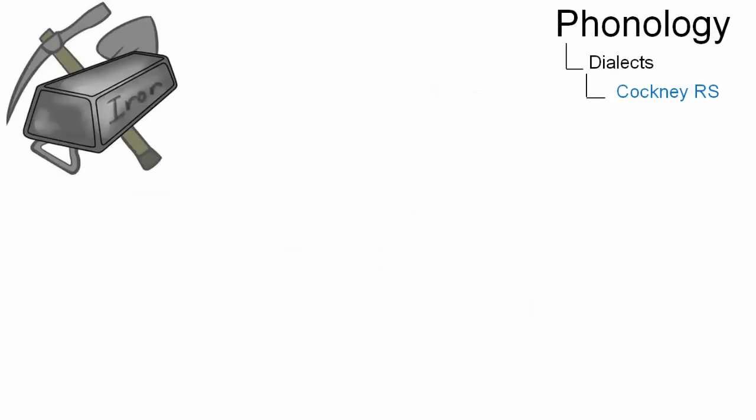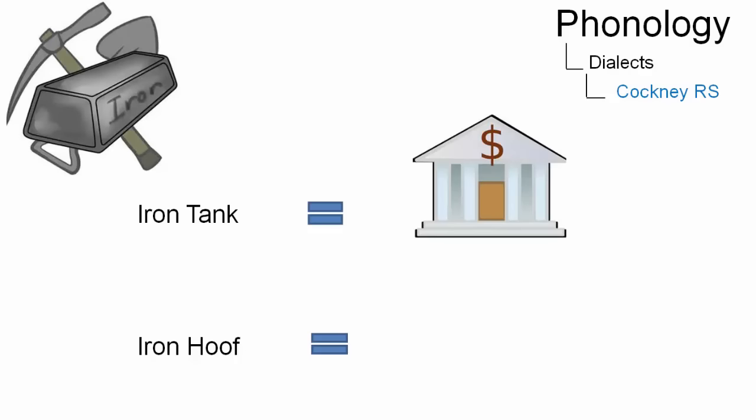For example, iron. Iron tank can be a bank, whereas iron hoof denotes a homosexual, where hoof rhymes with poof, which is a specific English expression for homosexuals.